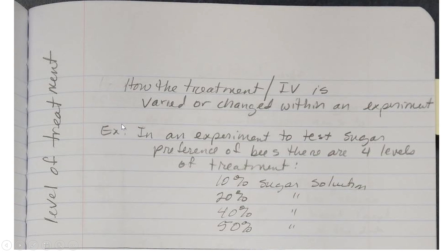So in this example right here, in an experiment to test sugar preference of bees, there's four levels of treatment. A 10% sugar solution, 20% sugar solution, 40% sugar solution, 50% sugar solution.